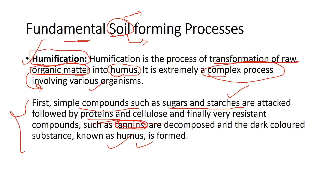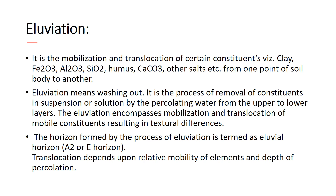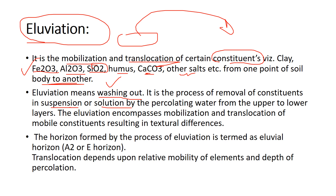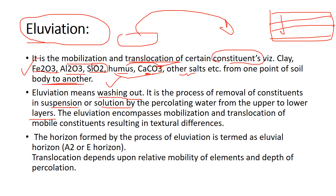The next process is eluviation. Eluviation is the mobilization and translocation of certain constituents — such as ferrous oxide, aluminium oxide, silicon dioxide, humus, calcium carbonate, and other salts — from one part of the soil body to another. In simple terms, it means washing out: the removal of constituents in suspension or solution by percolating water from upper to lower layers.